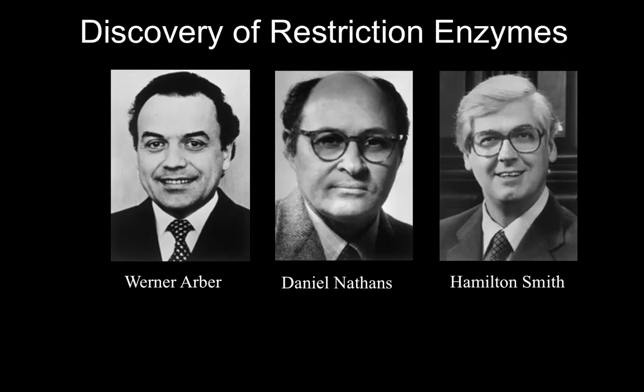In 1978, a Nobel Prize was shared by scientists Werner Arbor, Daniel Nathans, and Hamilton Smith for the discovery of restriction enzymes, a very important tool in the toolkit of the modern molecular biologist.